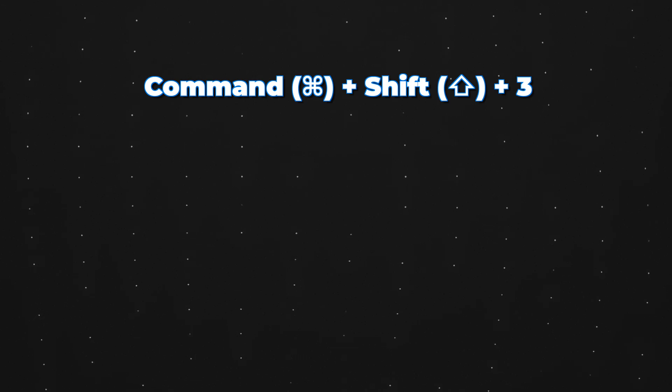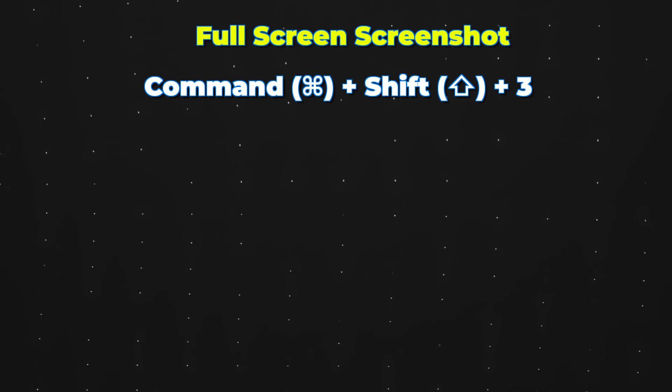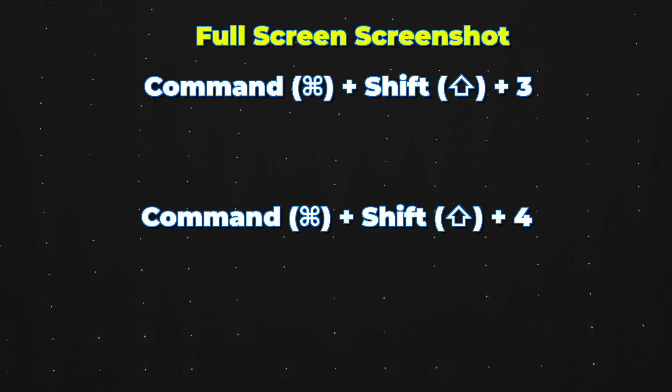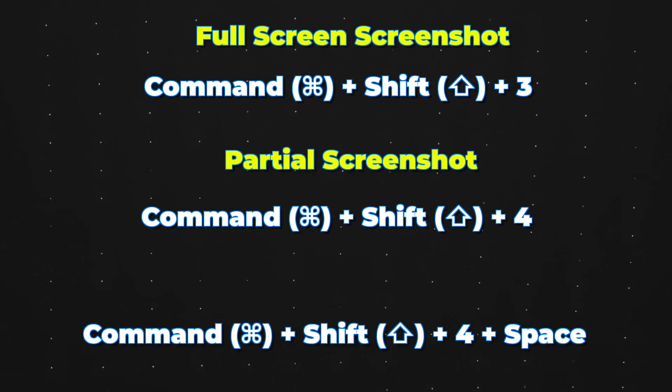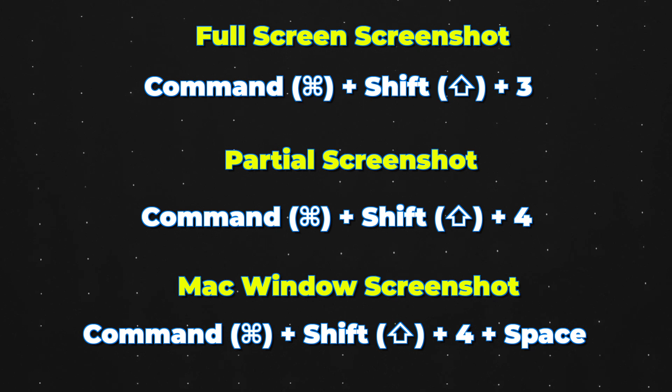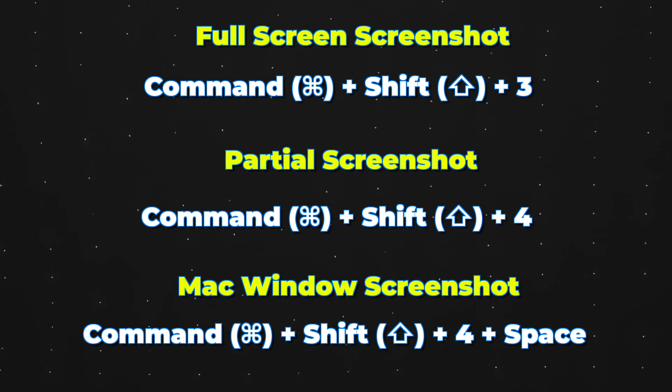To sum it up, there are three key shortcuts to remember: Shift + Command + 3 for a full screen screenshot, Shift + Command + 4 for a partial screenshot, and Shift + Command + 4 + Space if you want to take a windowed screenshot. Now let's talk about some problems you might face while trying to capture a screenshot on your Mac.